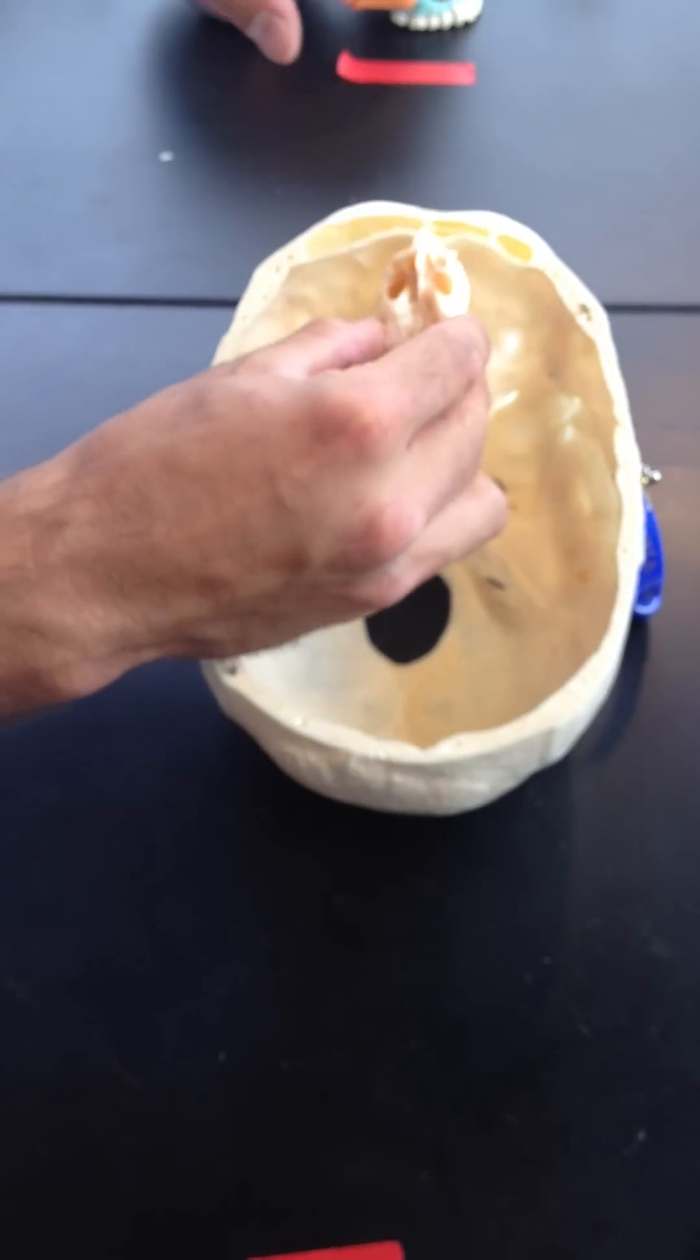So now we're going to talk about the ethmoid bone. You're looking at the posterior side, this is anterior. If you were to look at it in the skull, it would rest right like that.